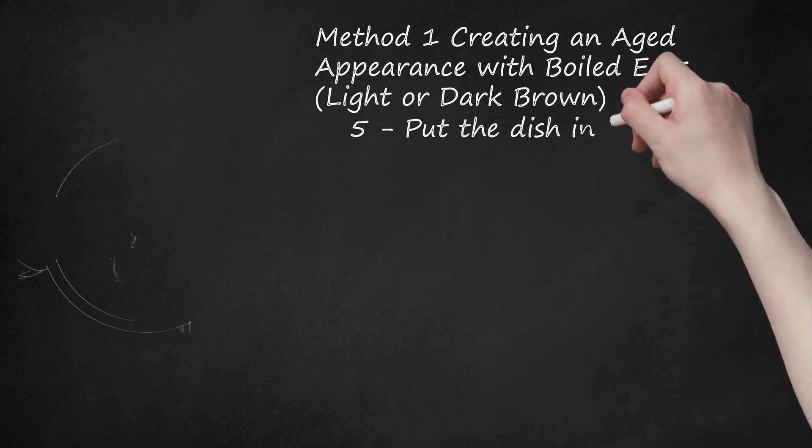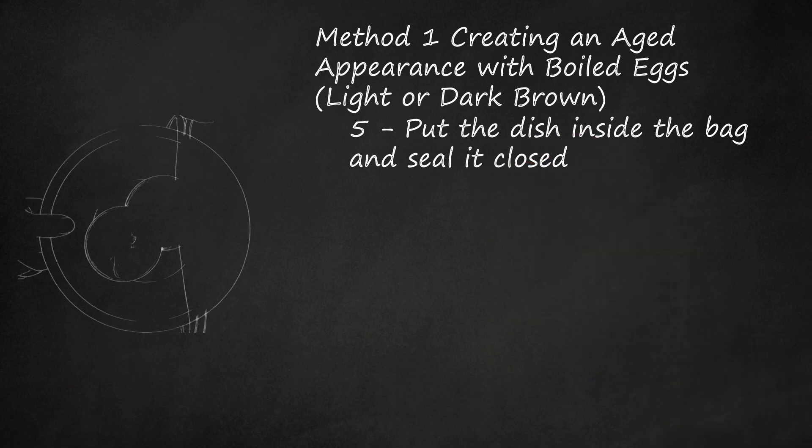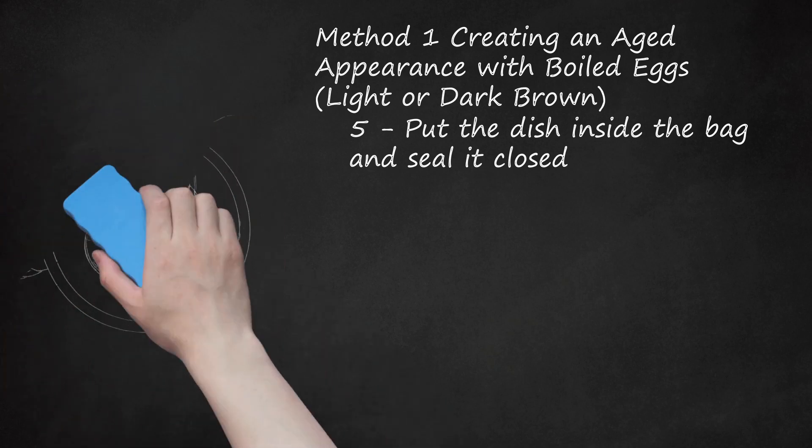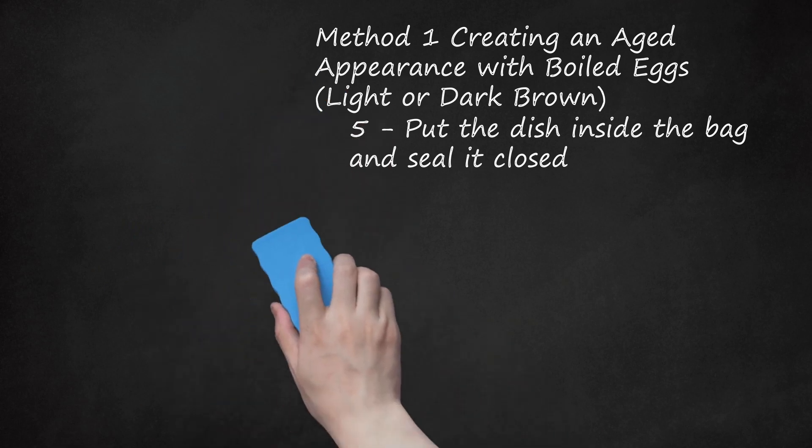Step 5: Put the Dish Inside the Bag and Seal it Closed. Place the dish containing your copper object inside the plastic bag. It does not matter whether it is near the mashed-up egg pieces, as long as they are not touching the copper. Seal or tie the bag closed to trap the sulfur fumes inside, or attach the lid if you are using a container. The bag will expand due to the heat of the eggs, but this shouldn't be enough to break most plastic bags.